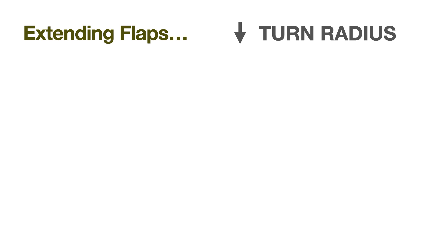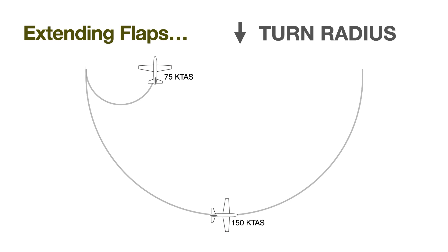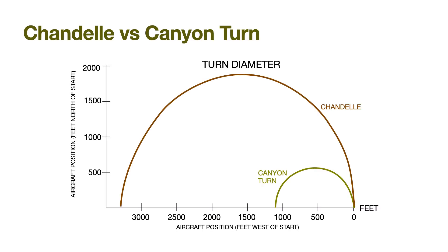Airspeed has a profound effect on turn radius. Doubling velocity quadruples turn radius, or said another way, cutting the velocity in half cuts turn radius by a factor of 4. Since flaps let us fly at a lower airspeed, they can help us make a much tighter turn. And there is no situation in which that is more important than the traditional canyon turn scenario, in which obstacles make a tight turn imperative.